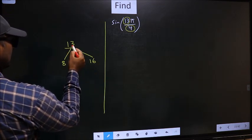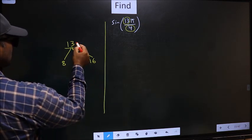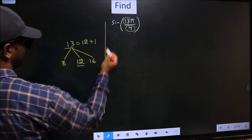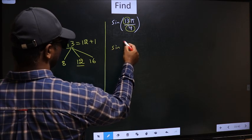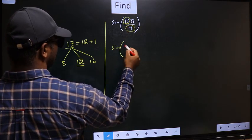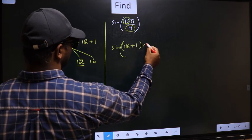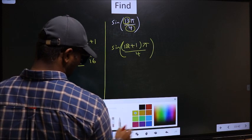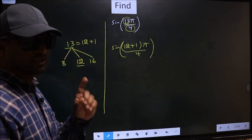Now 13 is close to which multiple? This is close to 12. So 13 should be written as 12 plus 1. So this will change to sin. In place of 13, now you should write 12 plus 1, pi by 4. This is your step 1.